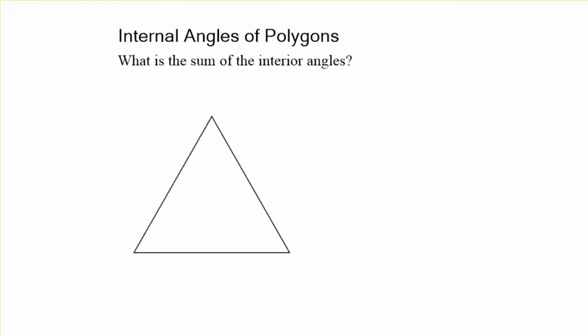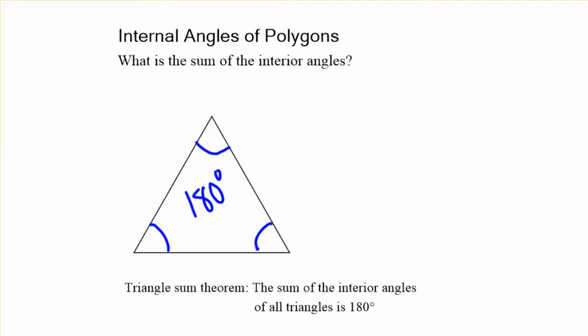The simplest polygon is going to be a triangle. What is the sum of those interior angles there? Well, it's always going to be 180 degrees. That's called the triangle sum theorem. The sum of the interior angles of all triangles is always 180 degrees.